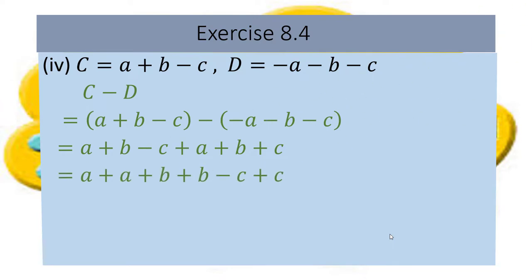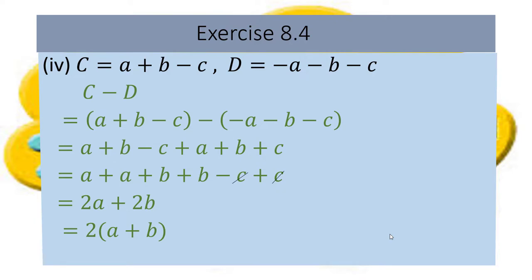In this expression, only C's terms have opposite signs, so they cancel each other — minus c and plus c cancel. Now A and B both have the same sign, so we can add them. Each has coefficient 1. A plus A gives 2a, and B plus B gives 2b. Since both terms have the same coefficient, we can also factor out 2 as a common term.